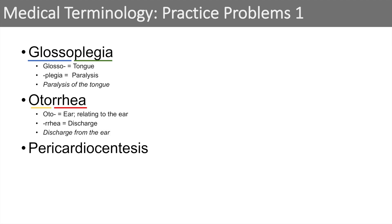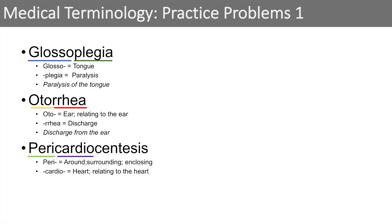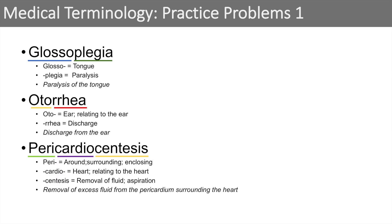The next word is pericardiocentesis. We just break it down. Peri — we've learned that peri stands for around, surrounding, or enclosing. Cardio — we know cardio stands for the heart or relating to the heart. And centesis — centesis actually means removal of fluid or aspiration. So when we put this all together, pericardiocentesis means a removal of excess fluid from the pericardium that surrounds the heart.